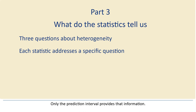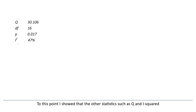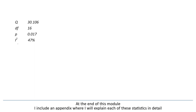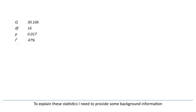To this point, I showed that the other statistics, such as Q and I-squared, do not tell us how much the effect size varies. So, what do they tell us? At the end of this module, I include an appendix where I'll explain each of these statistics in detail. Right now, I'll offer an overview. To explain these statistics, I need to provide some background information.